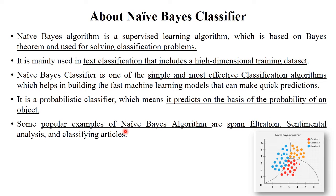The most popular examples of Naive Bayes algorithms are spam filtration — emails are by default classified into the spam folder, the inbox, or the sent folder. This algorithm is used for this email classification purpose. Other examples include sentimental analysis, text classification, and classifying articles. For all these classification purposes, Naive Bayes classifier algorithms are used.